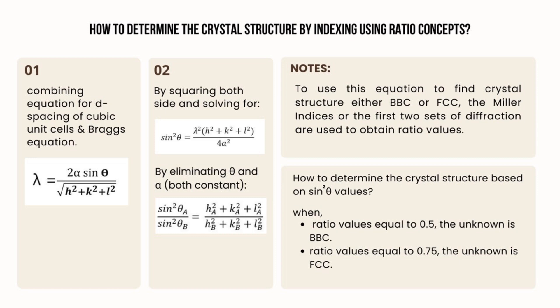However, since lambda can be obtained from the XRD machine and a is a lattice constant, we can eliminate these quantities by the ratio of 2 sin squared theta values, which is shown in the following equation.